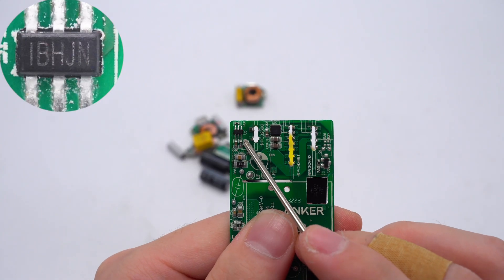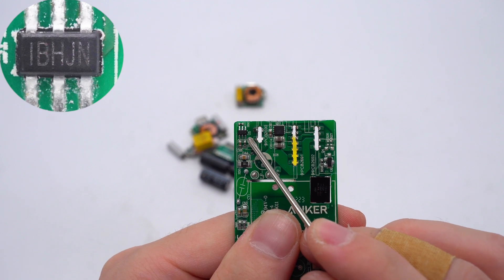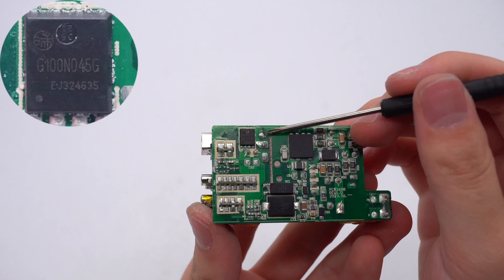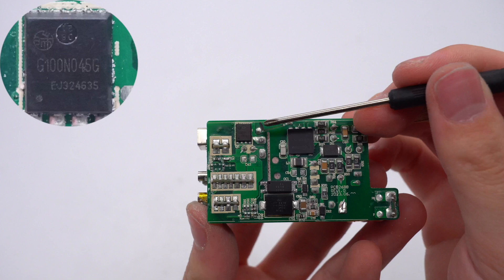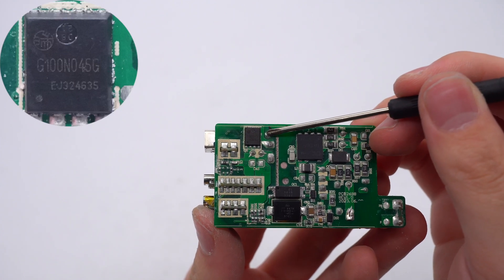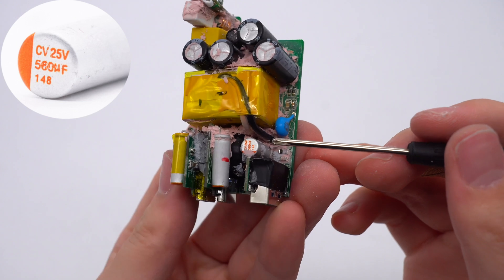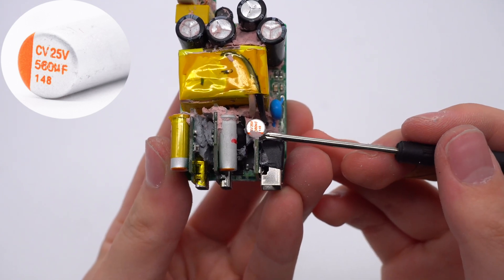Next, let's look at the synchronous rectification circuit. Its controller is from MPS. It can support a frequency of up to 600kHz and multiple working modes. The synchronous rectifier is from HRMacro and adopts PDFN 5x6 package, 100V, 3.4mΩ. The solid capacitor for output filtering is from CHNGCM, 25V, 560μF.